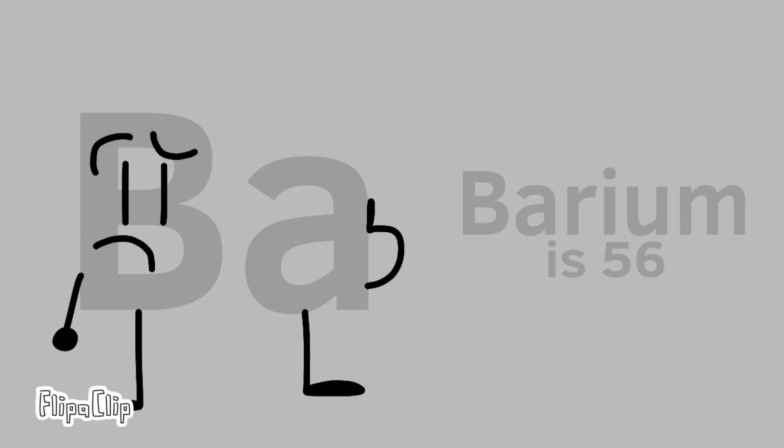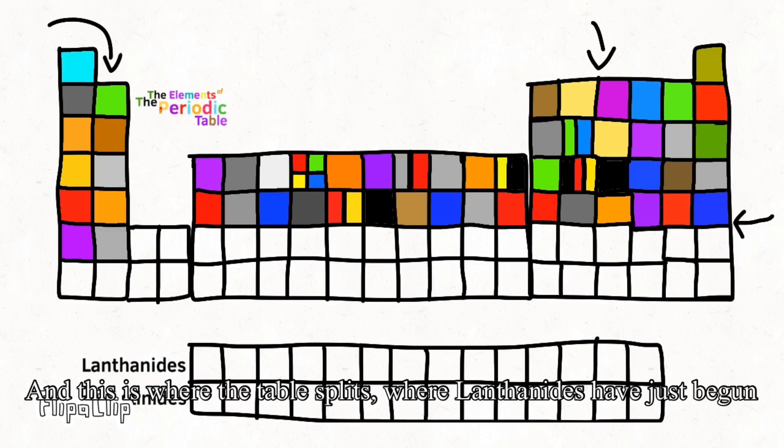Barium is 56, and this is where the table splits. Where Lanthanides have just begun.